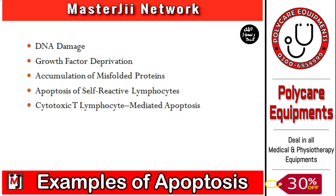In situations involving DNA damage, apoptosis is triggered. When there is radiation or a chemical therapy agent, DNA is damaged. To respond to this, we have the p53 protein, which will accumulate in the cells and help arrest the cell cycle.